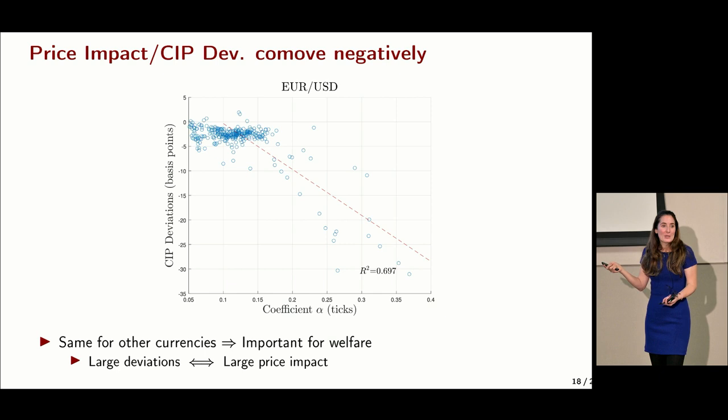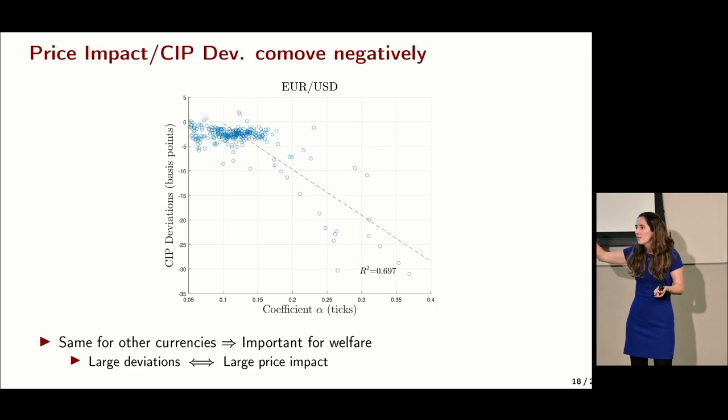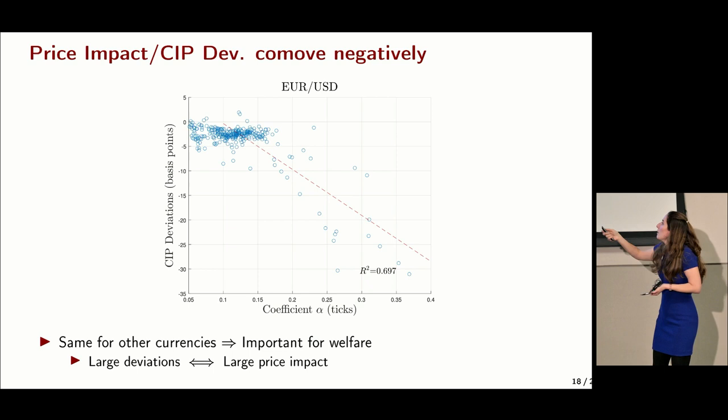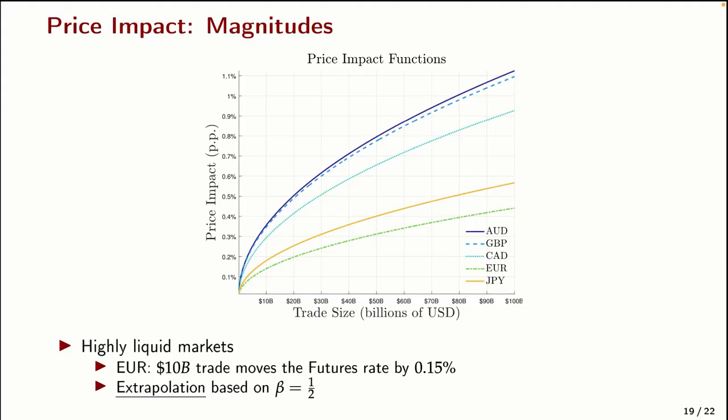This is why the welfare results shouldn't be surprising. When CIP deviations were close to zero, they were also very easy to close — so the total welfare value is small. When they were substantial, the gaps were easy to close because markets were illiquid. So we shouldn't expect large numbers in our computations of the cost of those deviations.